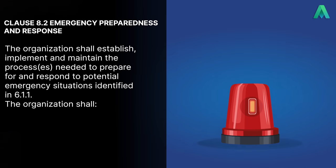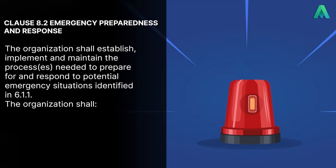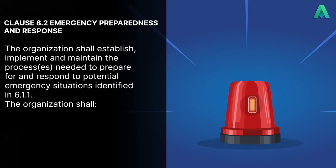Okay, let's get started. Let's take a look at what clause 8.2 wants us to do. First off, the clause states that the organisation shall establish, implement and maintain the processes needed to prepare for and respond to potential emergency situations as identified in 6.1.